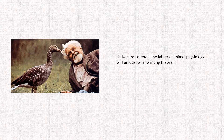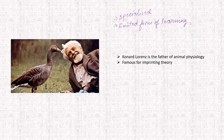As we learned, imprinting is a highly specialized and limited form of learning. Konrad Lorenz is also known as the father of animal physiology and he is famous for the imprinting theory. He gave the generalized idea of imprinting.